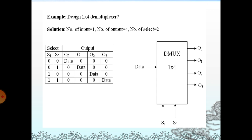If S1S0 is 00, then O0 will be 1 and the remaining outputs are 0. If S1S0 is 01, O1 will be high and the remaining outputs are 0. If S1S0 is 10, O2 will be 1 and the remaining outputs are 0. If S1S0 is 11, O3 will be 1 and the remaining outputs are 0. This is the truth table.